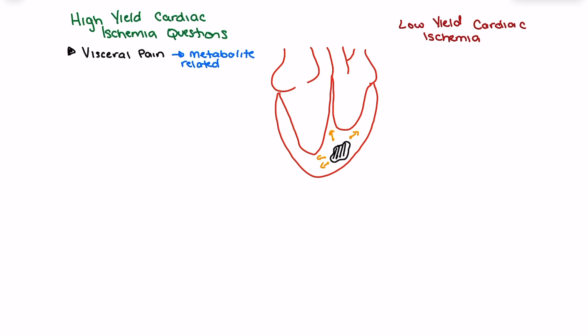When we talk about visceral pain, we're talking about things like a burning, pressure, or squeezing sensation that is often difficult to localize. Patients give more vague descriptions and the pain is typically challenging to pinpoint. When someone states they're having a visceral sounding chest pain — such as chest pressure that is challenging to localize — that is an indicator to start going through additional high yield questions pointing toward cardiac ischemia. If I start seeing a lot of positive results, I should have a high index of suspicion.